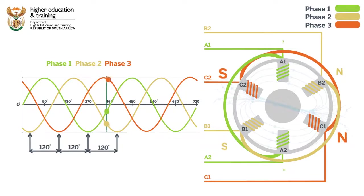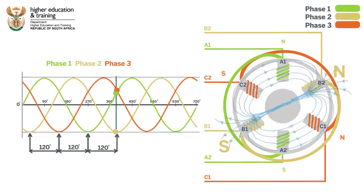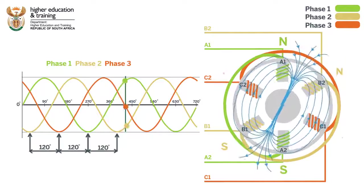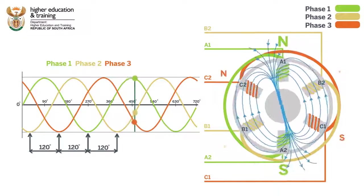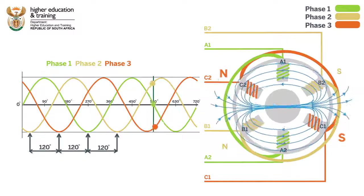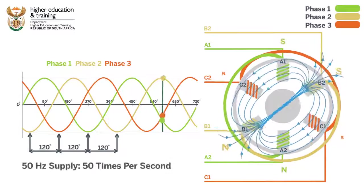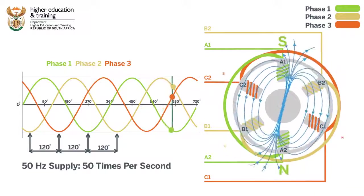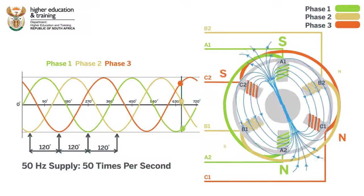The overall effect is a rotating magnetic field around the stator. The speed of this rotation is the same as the period of supply. In other words, a 50Hz supply will cause the field to rotate 50 times per second.